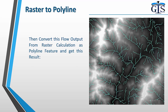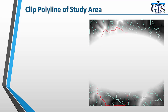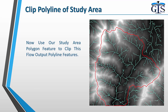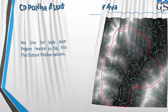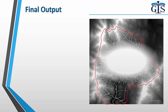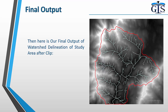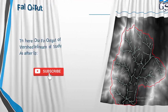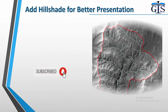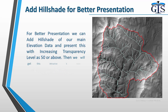Then we convert this flow output from raster calculation to a polyline feature and get the result shown. Next, we use our study area polygon feature to clip this flow output polyline. Congratulations — here is our final output of watershed delineation of the study area after clipping. For better presentation, we can add a hillshade of the main elevation data and set transparency to 50% or above. We then get an attractive and realistic output. Now let's do all of this analysis practically in the next lecture to achieve this result.